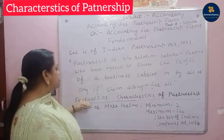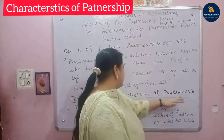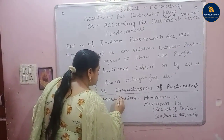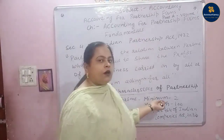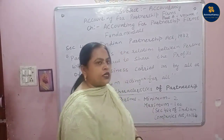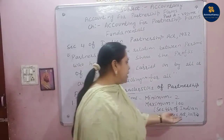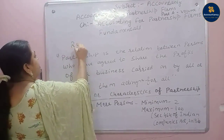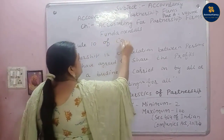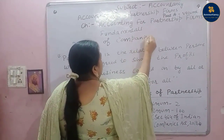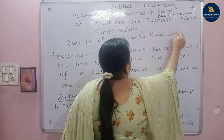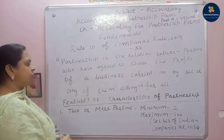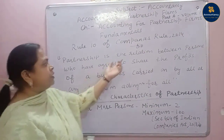From this definition, there are some features or characteristics of partnership. Feature one: two or more persons. Two persons are required to form a partnership. The maximum, according to Section 464 of the Indian Company Act 2013, is 100. But according to Rule 10 of Companies Rules 2014, the maximum partners are 50. So the answer to the exam question about the maximum limit of partners should be 50.